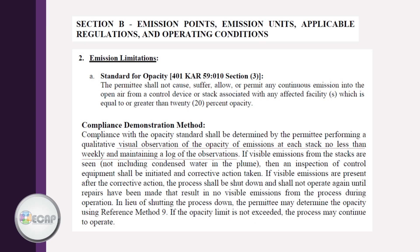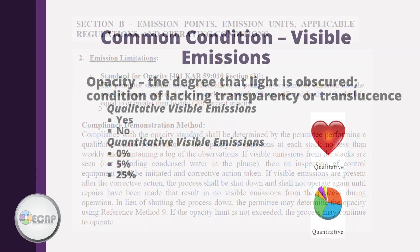Section 2 under emission limitations is where you will find what the limitation is and how you are to prove the limitation is being maintained. For example, a common limitation is an opacity limit or visible emissions limitation. The method of compliance for this unit is weekly observations and maintaining a log. If you are required to monitor it, then you should always record it and report it.